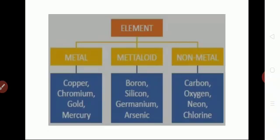What is the classification of elements? They are classified into metals, metalloids, and nonmetals. Metals are good conductors of heat and electricity. Nonmetals are poor conductors of heat and electricity. Metalloids have the properties of both metals and nonmetals.